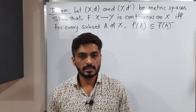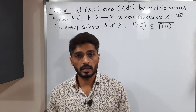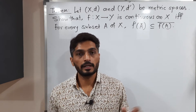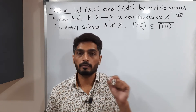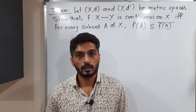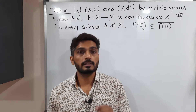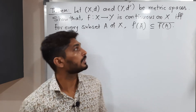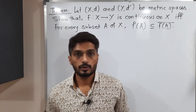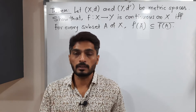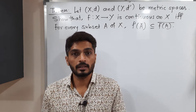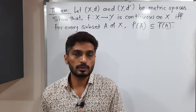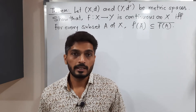Let us discuss this theorem — it is a very interesting theorem. We have two metric spaces X,d and Y,d'. f is a function defined from X to Y. What we have to prove is that this function f is continuous on X if and only if a certain condition is satisfied. As mentioned, an if-and-only-if condition can be considered an equivalent definition of a continuous function.